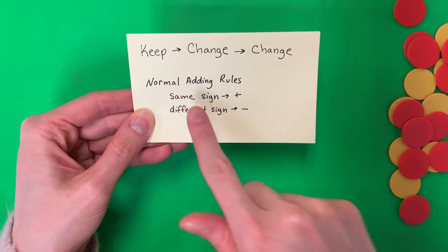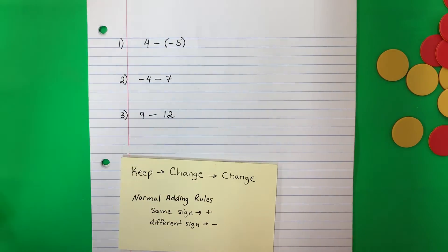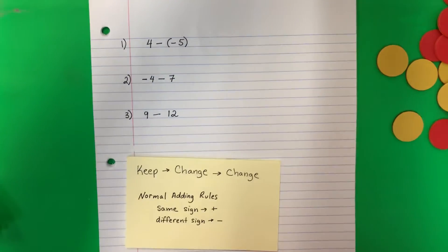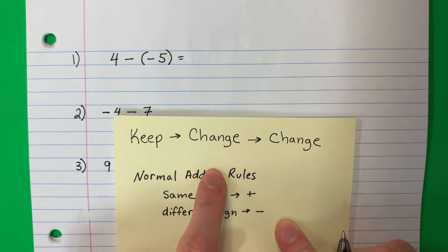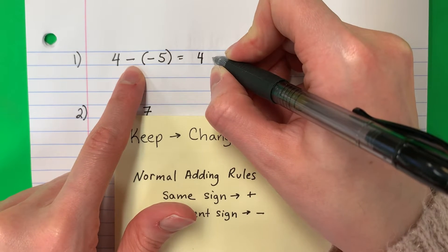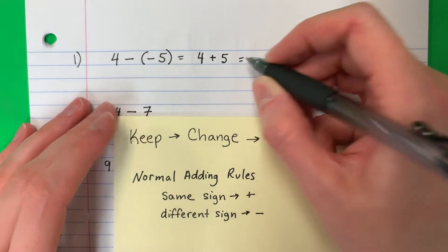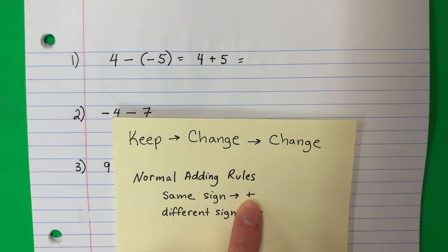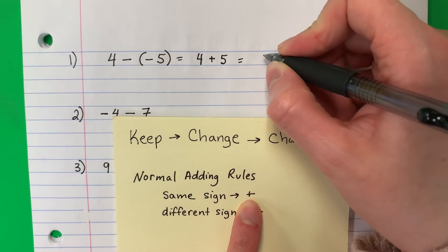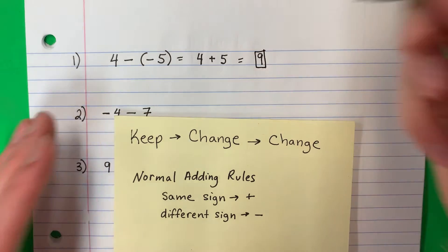Here is our first question. The very first thing we do is keep, change, change. Keep 4, change minus to plus, change negative 5 to positive 5. This is positive 4 plus positive 5 — same sign, so we add. 4 plus 5 is positive 9. Keep the same sign — positive — so the answer is positive 9.